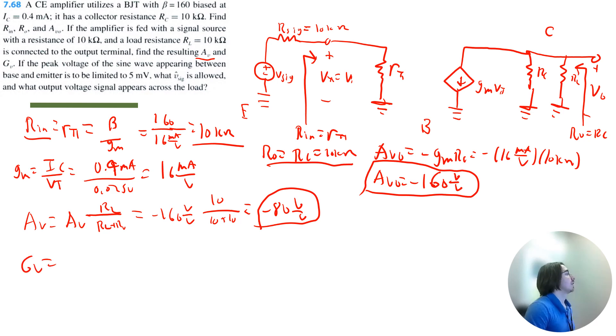Now similarly, Gv is now doing the resistor division from the input terminal with rπ being divided by rπ plus Rsignal. So that is negative 80 volt per volt times, once again, 10 divided by 10 plus 10. That's equal to negative 40 volt per volt.